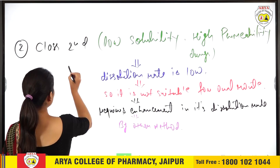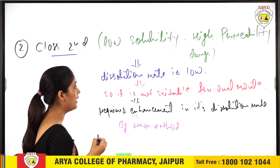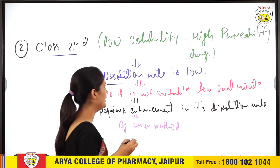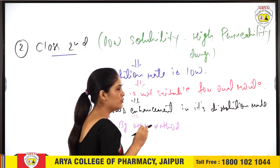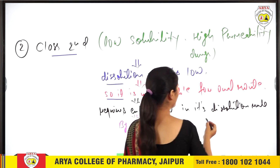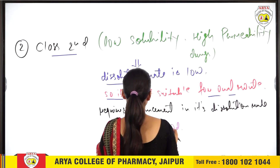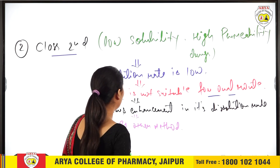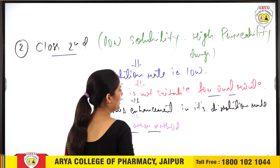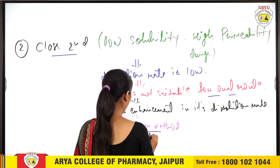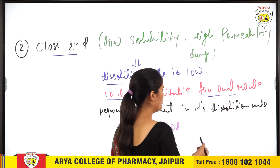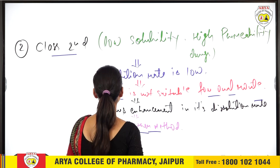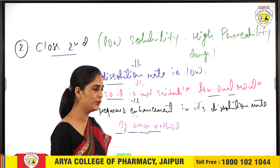Next class: low solubility और high permeability drugs. Means इसकी जो dissolution rate है वो basically low है। It is not suitable for oral route, इसलिए ये oral route के लिए suitable नहीं है। But they require enhancement in its dissolution by other method — अगर हम इसको किसी other method से देते हैं, तो इसकी dissolution rate को enhance कर सकते हैं।